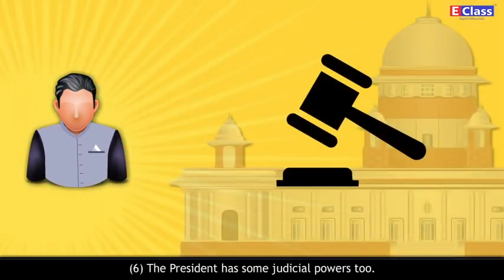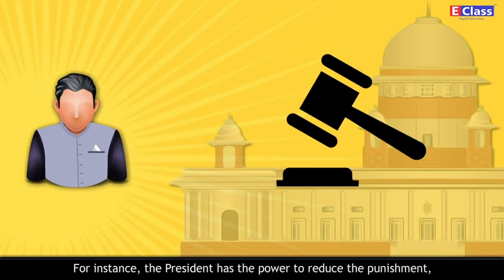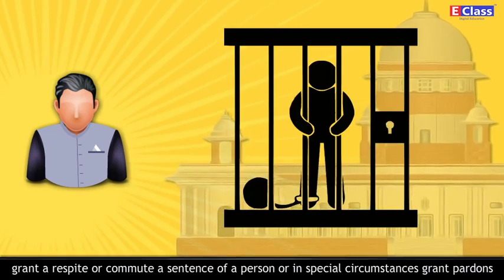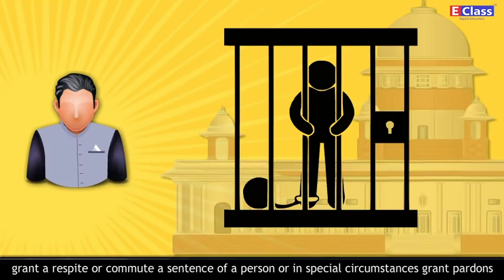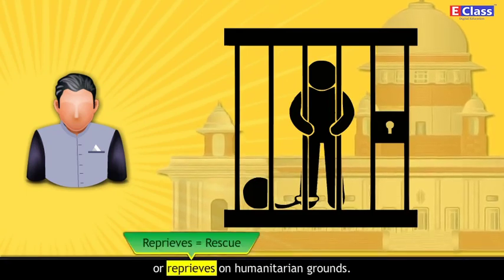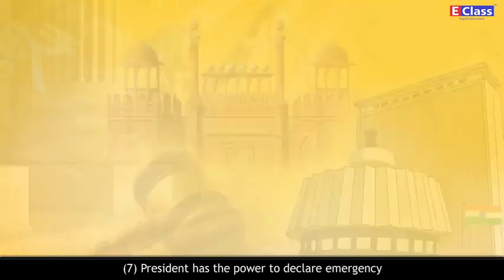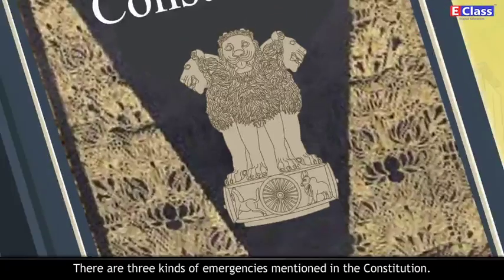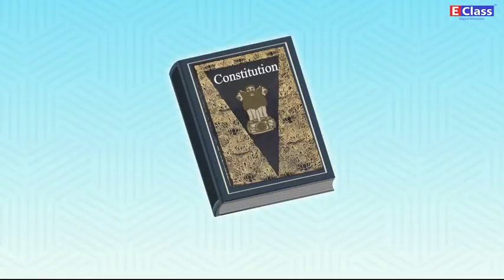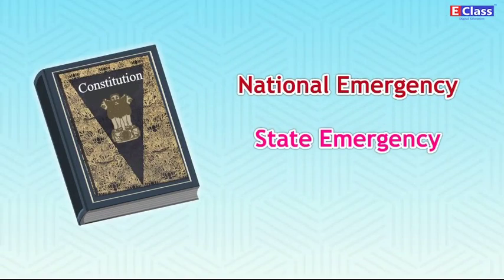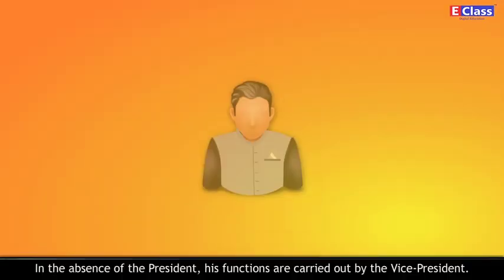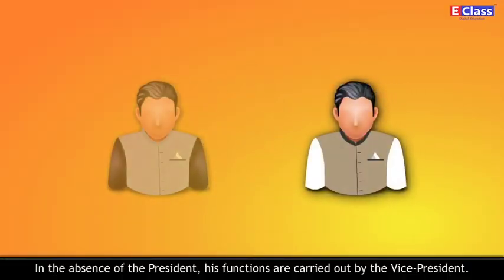The President has some judicial powers too. For instance, the President has the power to reduce punishment, grant a respite or commute a sentence, or in special circumstances, grant pardons on humanitarian grounds. The President also has the power to declare emergency in case of a crisis. There are three kinds of emergencies mentioned in the Constitution: National Emergency, State Emergency, and Financial Emergency. In the absence of the President, his functions are carried out by the Vice President. The Vice President is elected by the members of both Houses.